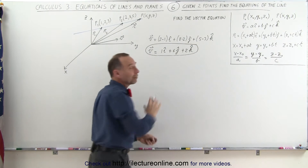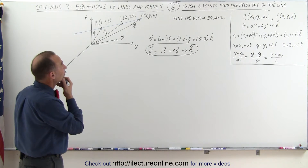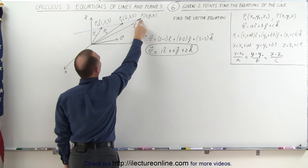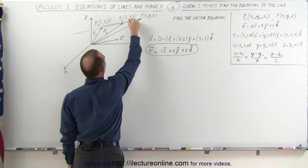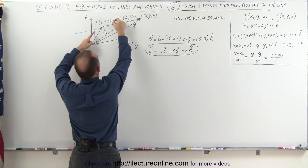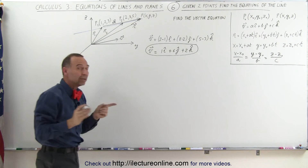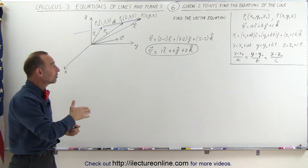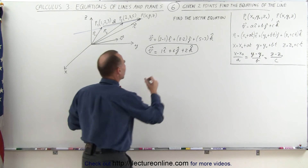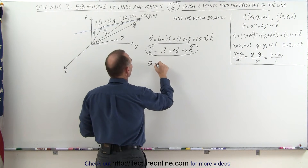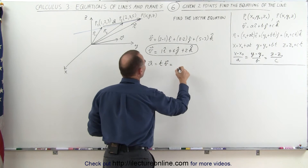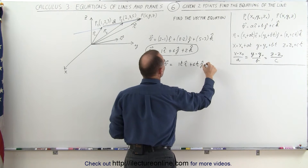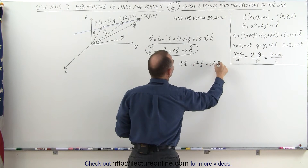Now that we have the parallel vector to the line, the next thing we should do is find the vector from any point — let's take point 1 — to point P. Let's call that the A vector. Notice that the A vector is longer than the V vector but parallel to it, which means we need a parameter like t. We can write that the A vector equals t times the V vector: 1t in the i direction, plus 6t in the j direction, plus 2t in the k direction.